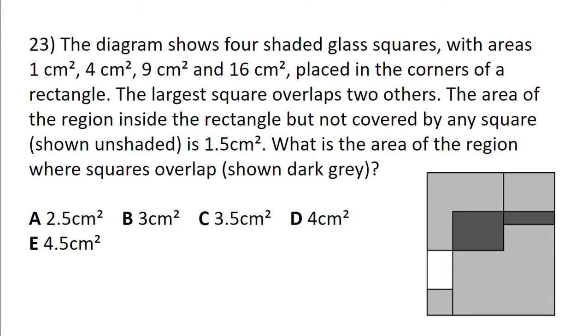What is the area of the region where the squares overlap, shown in dark grey?